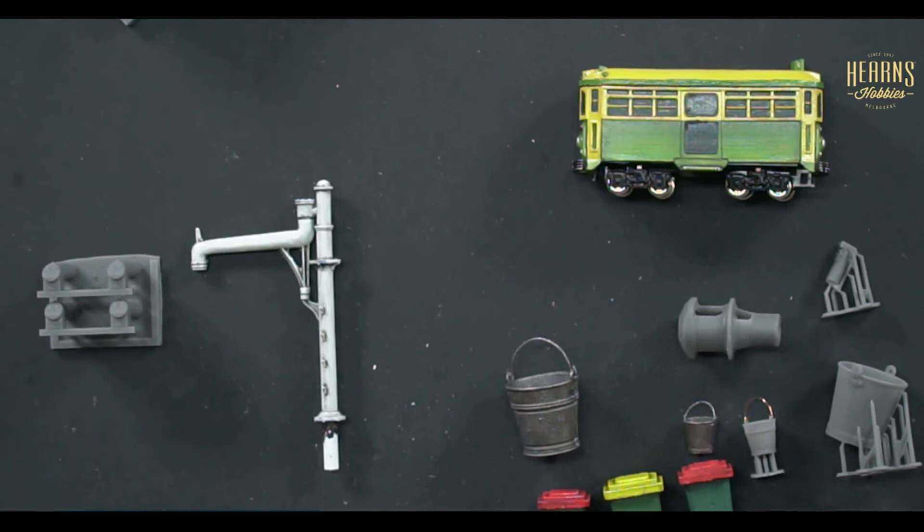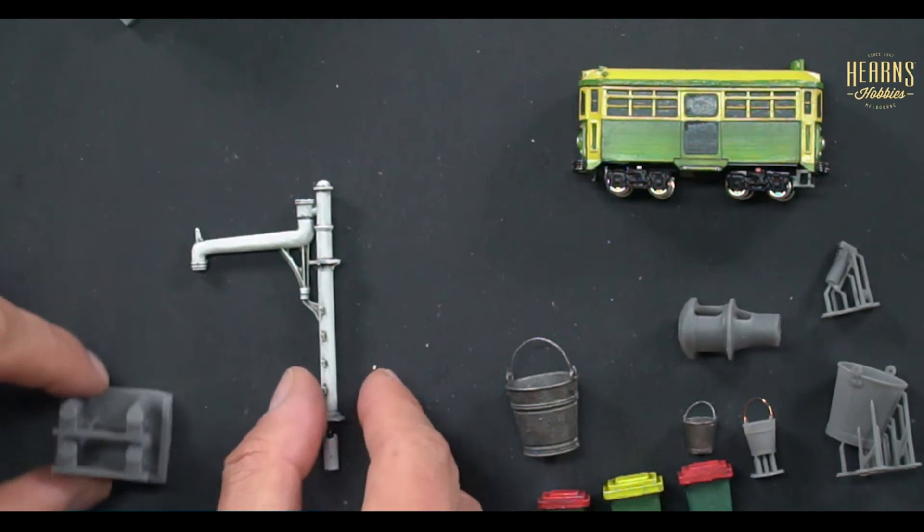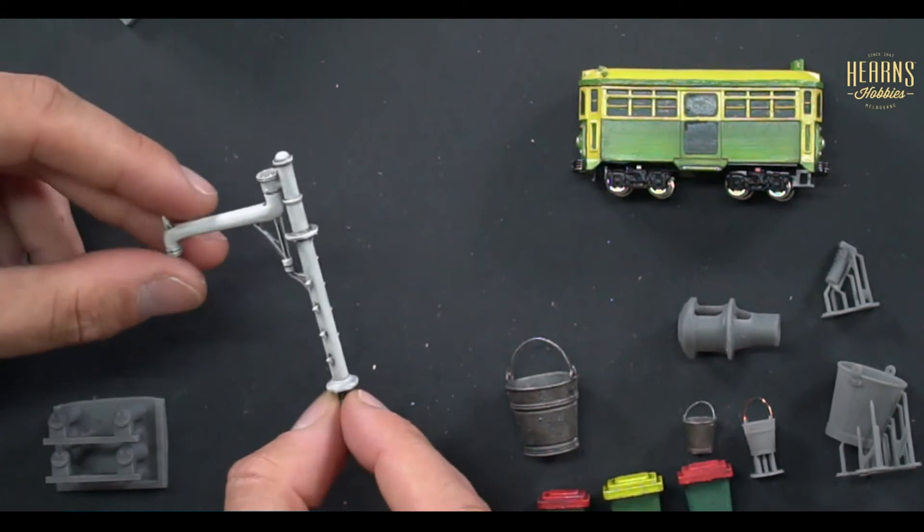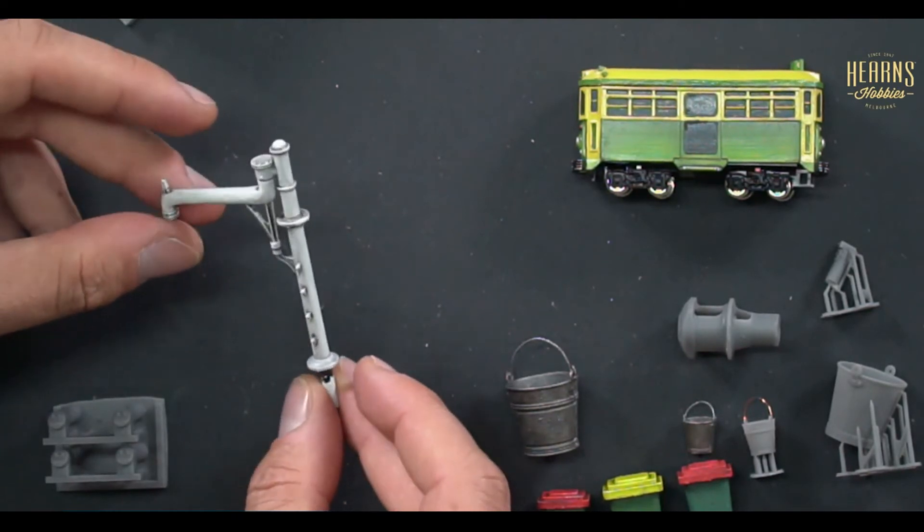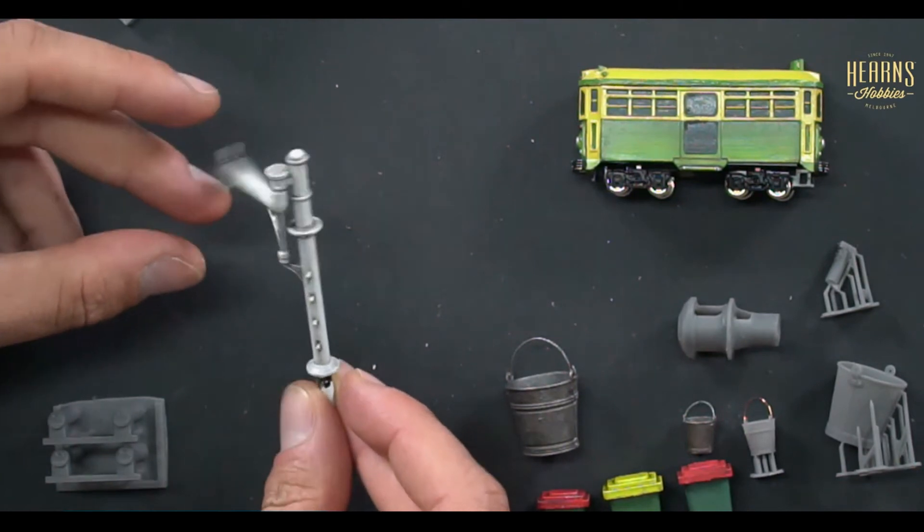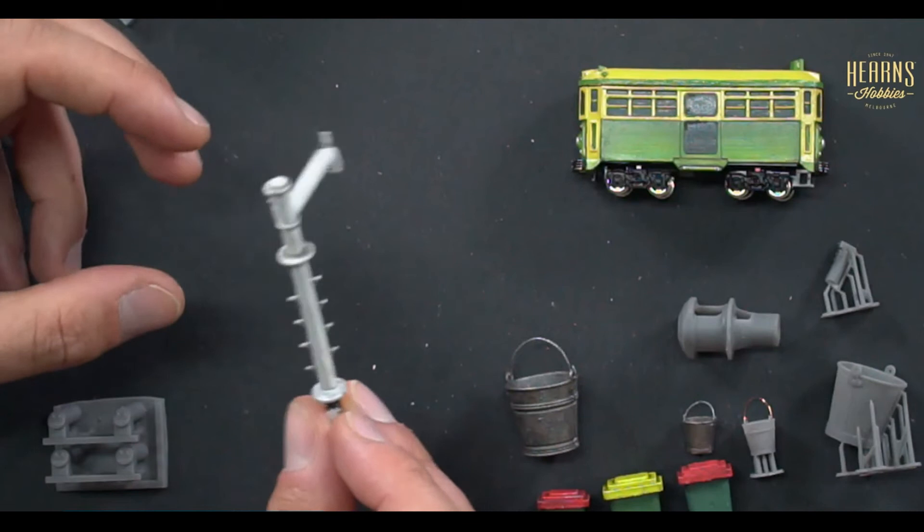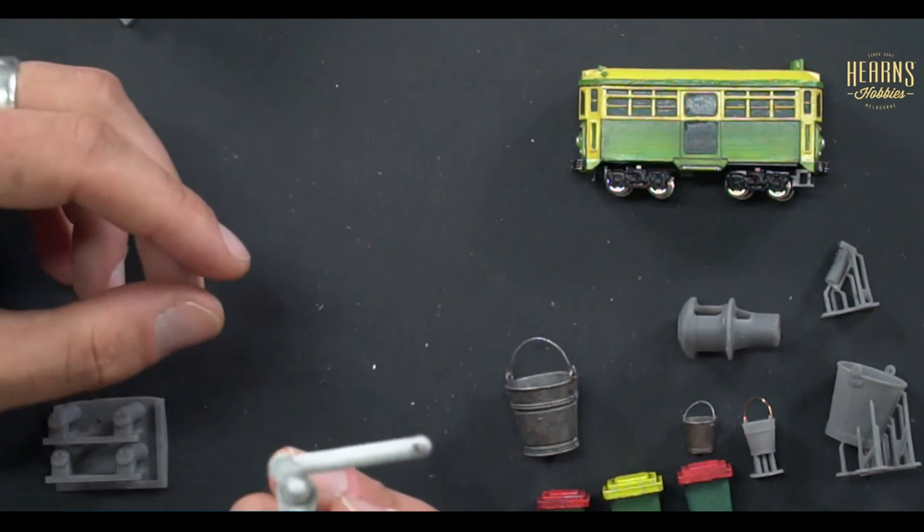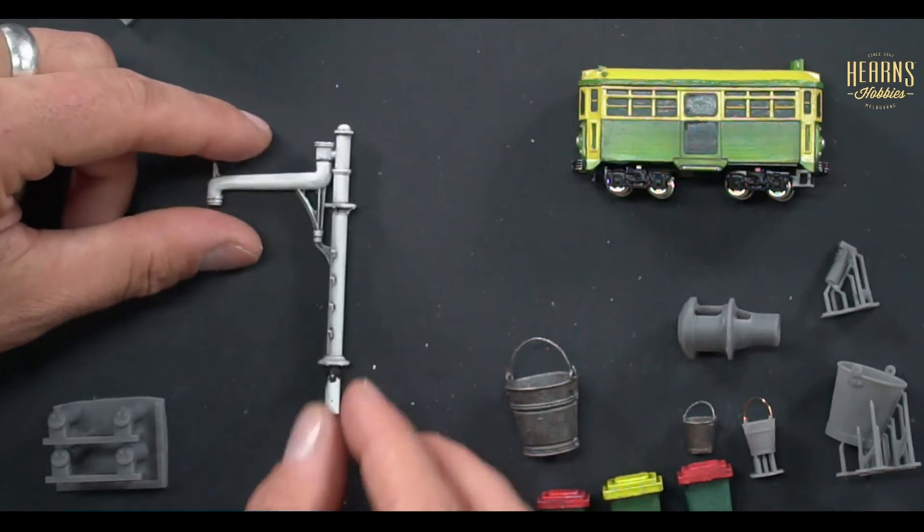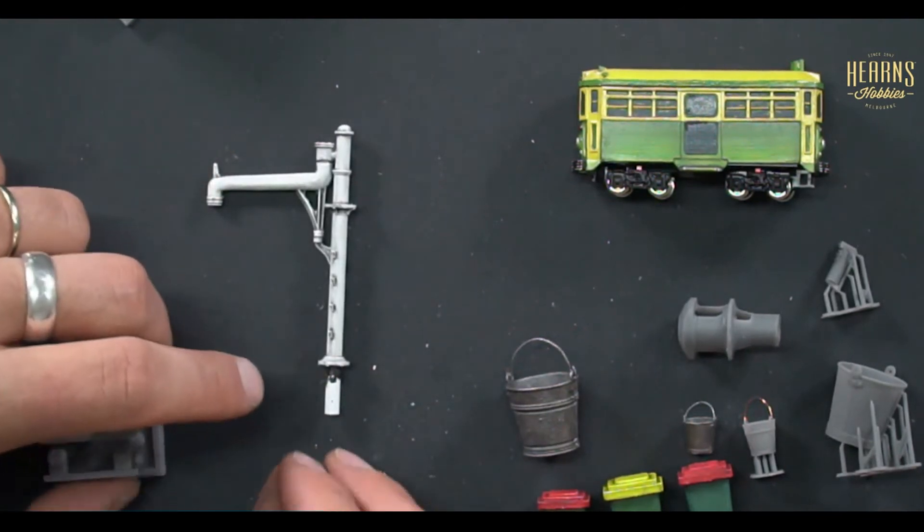Back to the train. Got your buffer stop here, and then we have the Victorian water crane. This is a very popular thing that you see around country towns. It's designed in three pieces so it swings. You can see like the original.